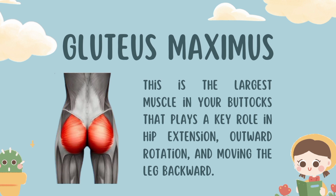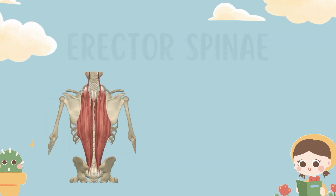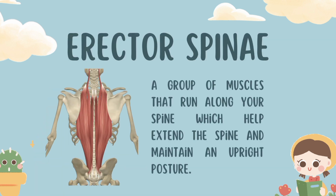Another one is the gluteus maximus, the largest muscle in our buttocks, which plays a key role in hip extension, outward rotation, and moving the leg backward. It's essential for activities like climbing stairs, standing up from a sitting position, and maintaining an upright posture.